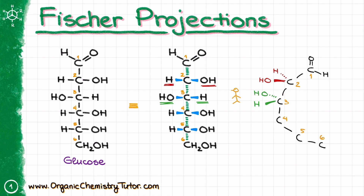Moving on to carbon number three, I have hydrogen closer to the observer, which means that hydrogen is now going to be on the wedge and the OH group, which is further away from me, is sitting on the dash. Carbon number four has a similar situation to carbon number two, with the OH group looking at me and hydrogen looking away. On carbon number five, OH is looking towards the observer and hydrogen is looking away. Carbon number six has no meaningful stereochemistry, so I will just rewrite that as CH2OH.